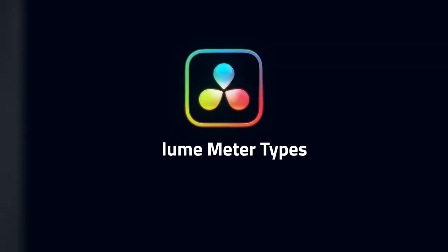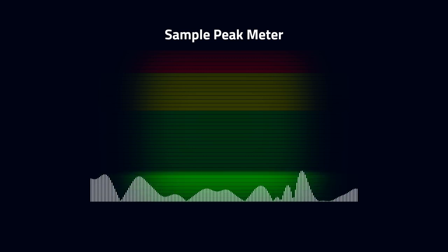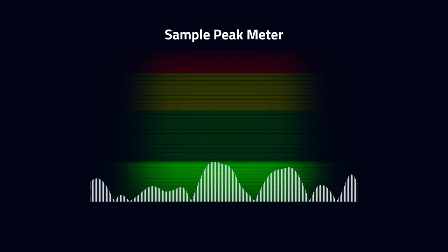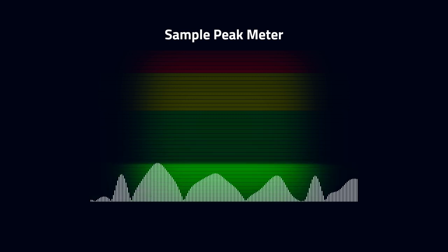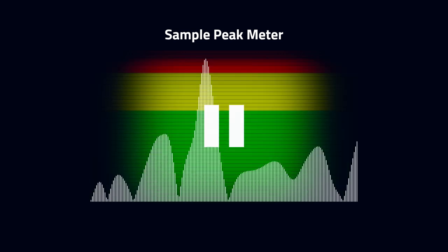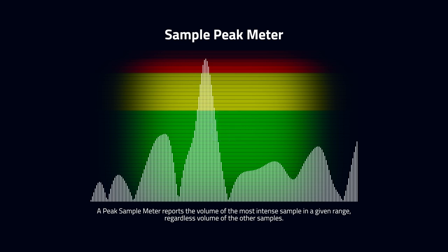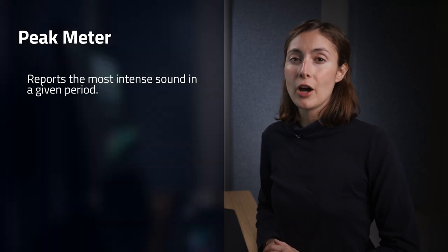But it gets a little more complicated than that because there are different ways to measure the volume of an audio recording. A typical volume meter measures the peak intensity of a sound. Most audio that video editors work with is broken up into 48,000 samples per second. If just one single sample of that audio is super loud, a peak meter will report that level, even if every other sample in the measured range is super quiet. Peak meters are super useful when recording and editing audio.